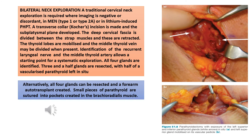Regarding bilateral neck exploration, traditional cervical neck exploration is required where imaging is negative, or in MEN type 1 or type 2A, or in lithium-induced primary hyperparathyroidism. A transverse collar (Kocher) incision is made and the subplatysmal plane developed. The deep cervical fascia is divided between the strap muscles and these are retracted. The thyroid lobes are mobilized and the middle thyroid vein may be divided. Identification of the recurrent laryngeal nerve and inferior thyroid artery allows a starting point for systematic exploration. All four glands are identified; 3.5 glands are resected with half a vascularized parathyroid left in situ. Alternatively, all four glands can be resected and forearm autotransplantation created, with small pieces of parathyroid sutured into a pocket in the brachioradialis muscle.